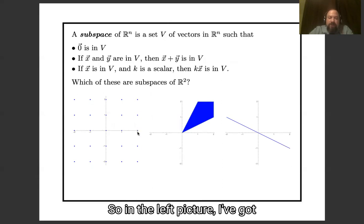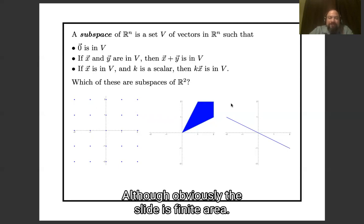So, in the left picture, I've got this blue square grid. In this middle picture, I've got this blue cone. You're supposed to interpret this as stretching off to infinity.